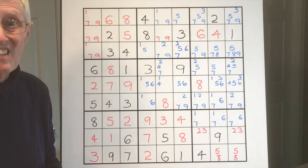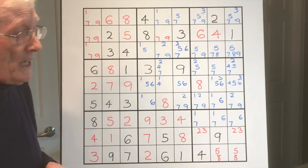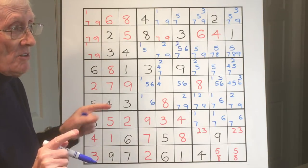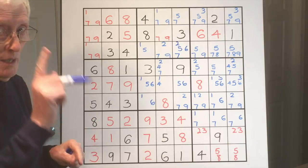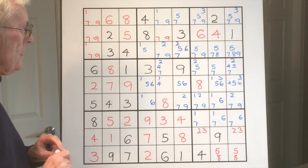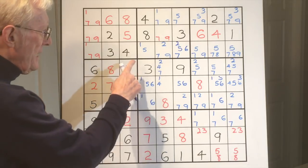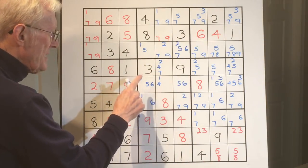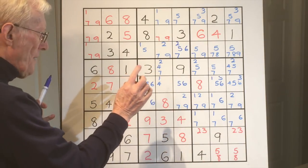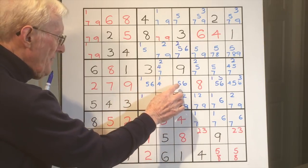Okay, then the next step is to look for a block somewhere where there's a number that can only be in a row or a column and nowhere else. In this block here, this is a perfect example.